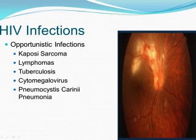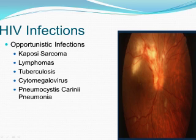Cytomegalovirus. The common herpes virus is transmitted in body fluids such as saliva, blood, urine, semen, and breast milk. But a healthy immune system inactivates the virus and it remains dormant in the body. If the immune system weakens, the virus resurfaces, causing damage to the eyes, digestive tract, lungs, or other organs. Most commonly, CMV causes infection and inflammation of the retina — CMV retinitis. If not treated, CMV retinitis can lead to blindness.